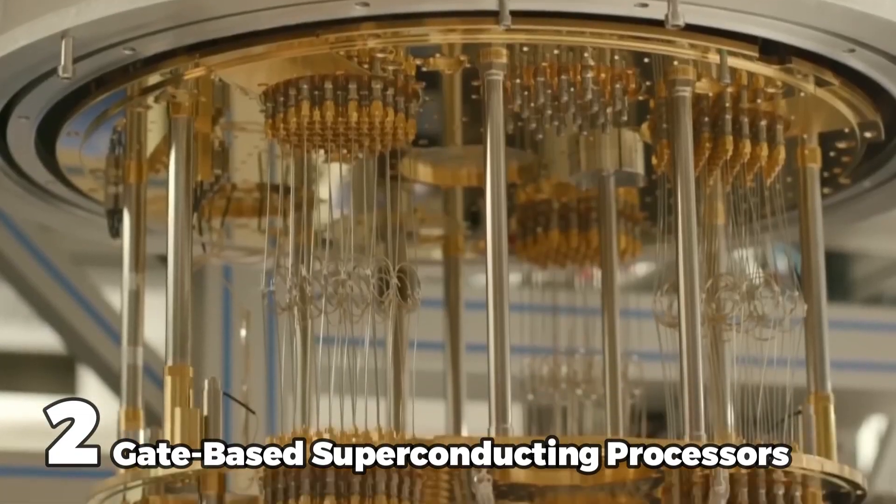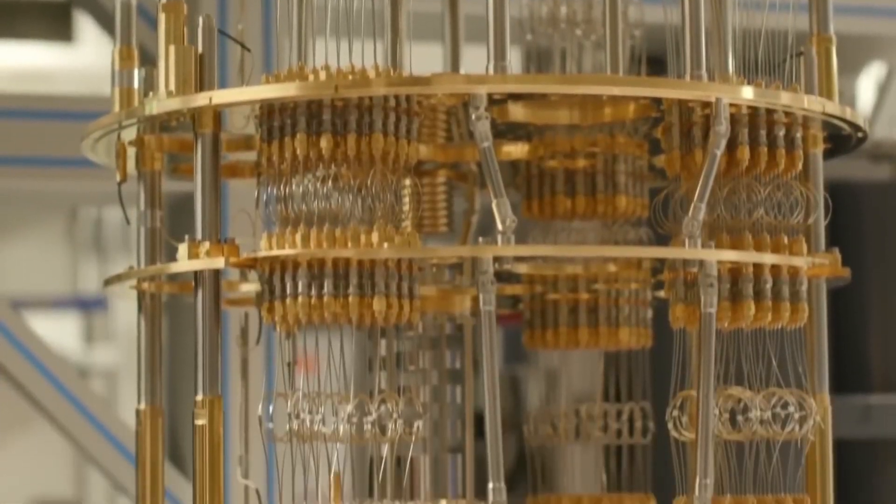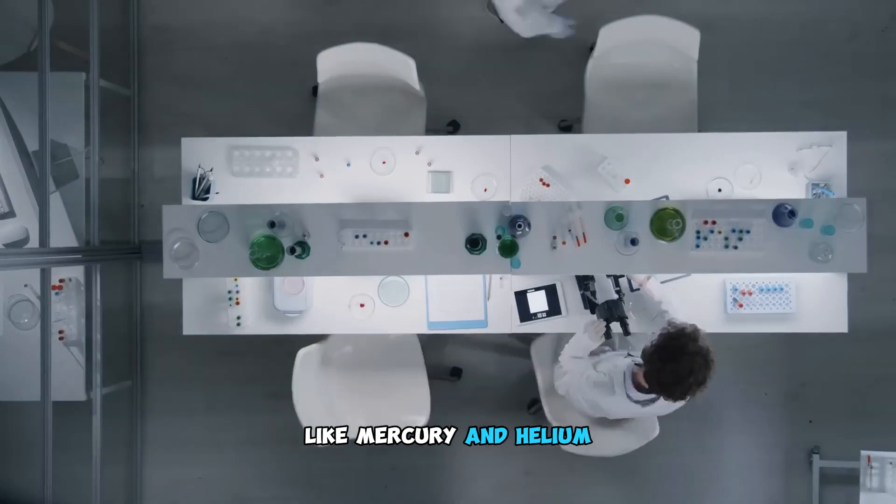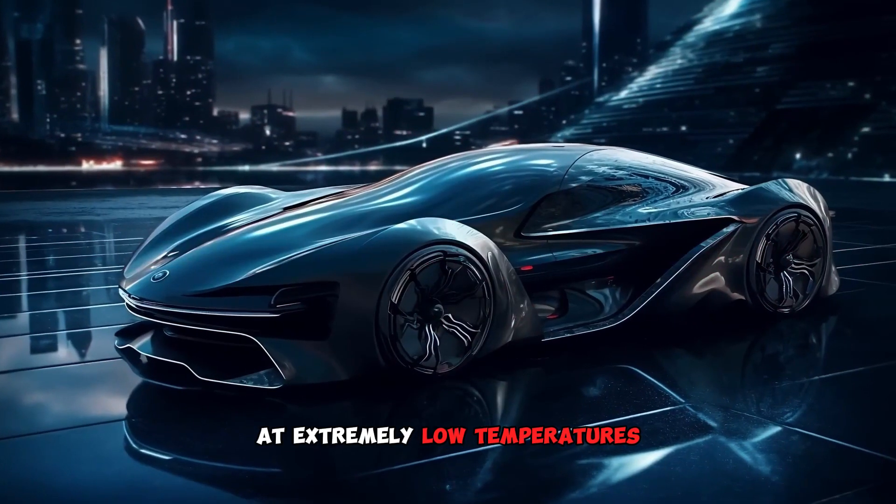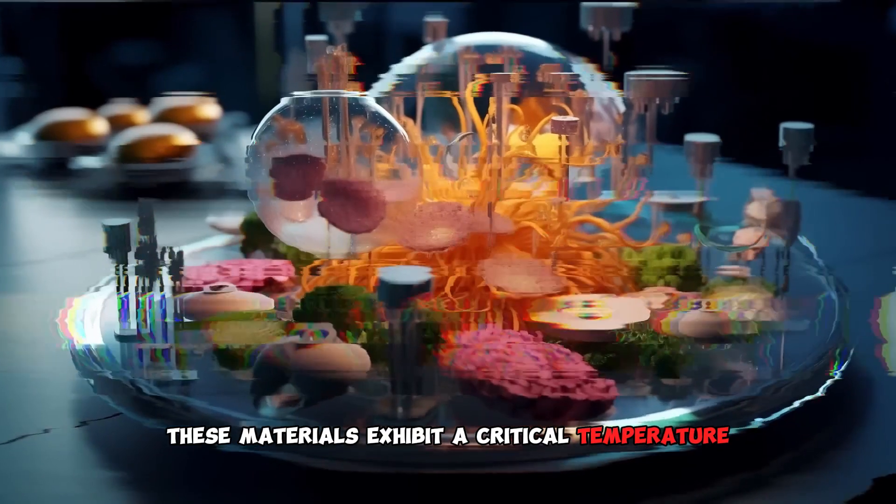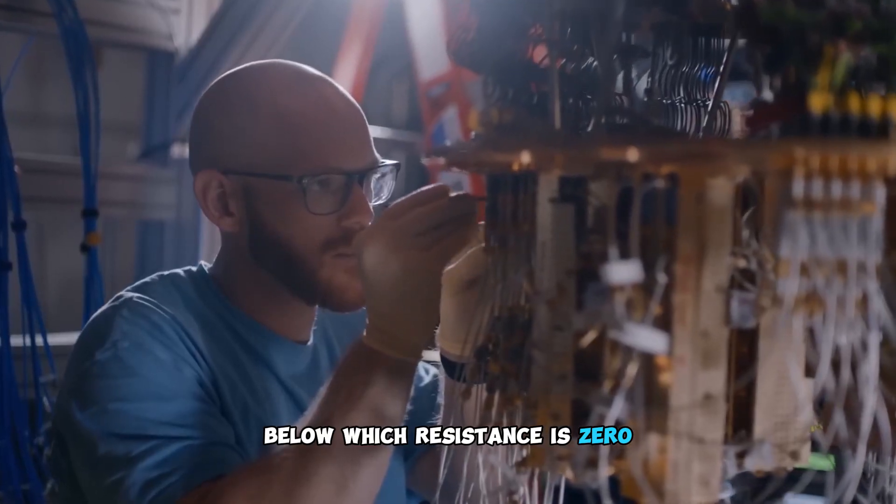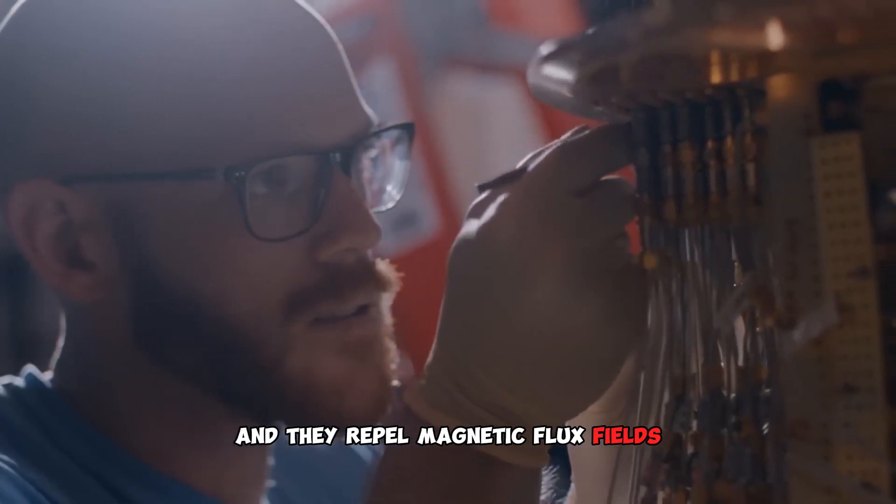Gate-based superconducting processors. Superconductivity manifests in specific materials like mercury and helium at extremely low temperatures. These materials exhibit a critical temperature below which resistance is zero, and they repel magnetic flux fields.